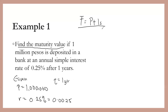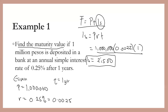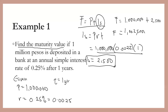Using the first formula, we need to find the simple interest first. The formula for simple interest is IS equals P times r times t. So we have 1,000,000 times 0.0025 times 1, which equals 2,500. Now using F equals P plus IS, we have 1,000,000 plus 2,500, so the maturity value is 1,002,500 pesos.